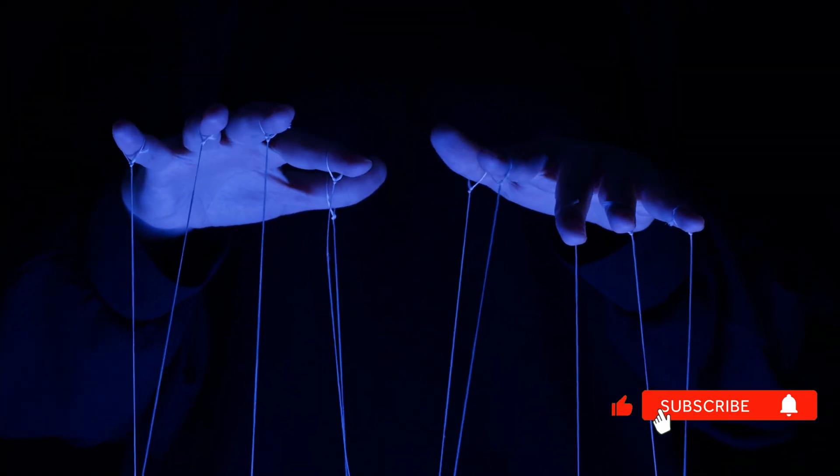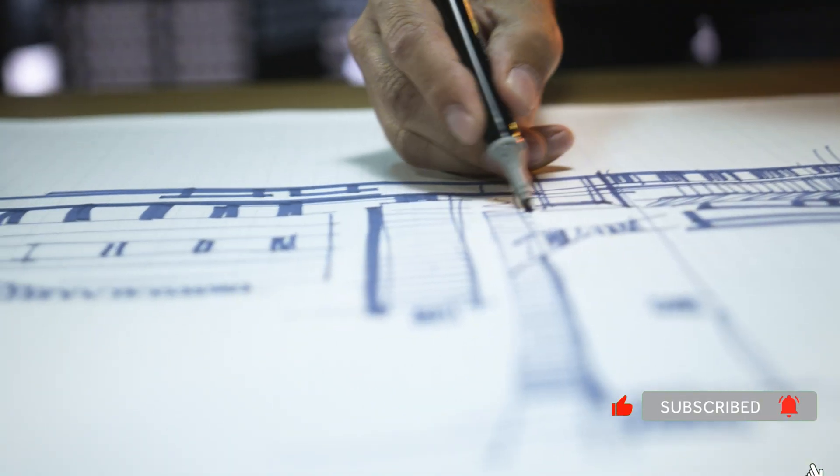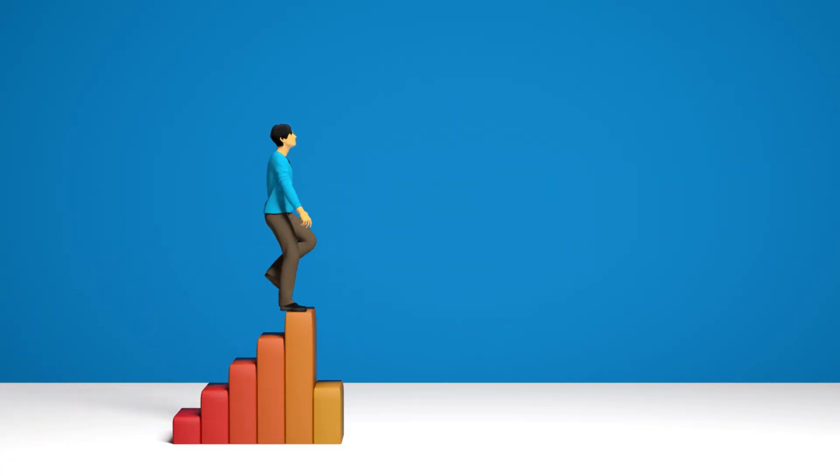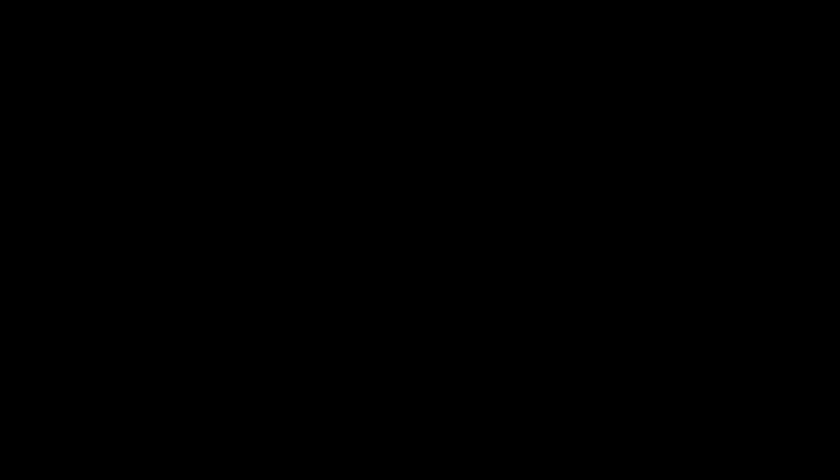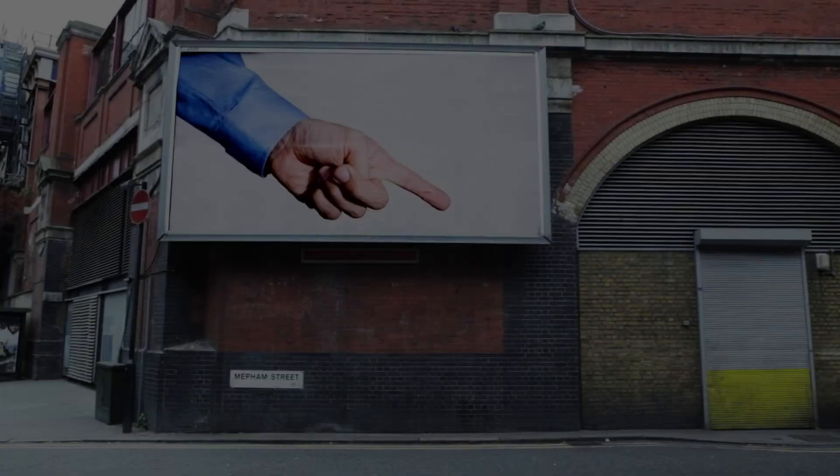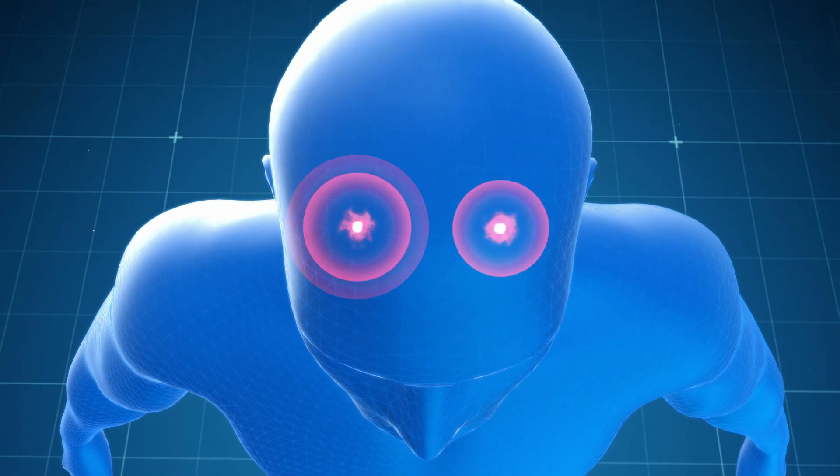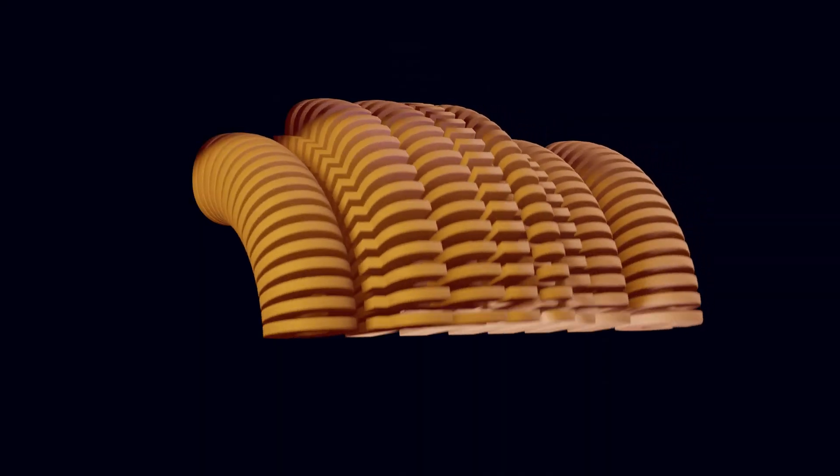Thing three. They never blame external circumstances. Two types of people. External locus. Life controls me. Internal locus. I am the architect. Stanford's 40-year study: Internal locus of control predicts life success better than IQ. Better than IQ. When you blame externally, cortisol floods your system. Amygdala activates. Prefrontal cortex shuts down.